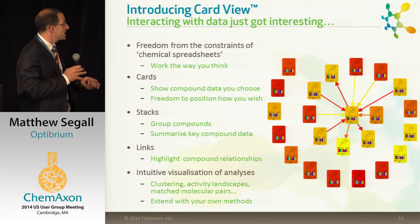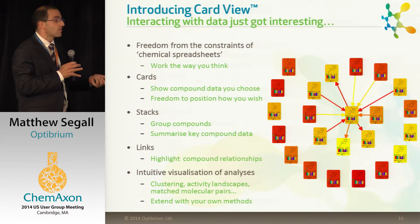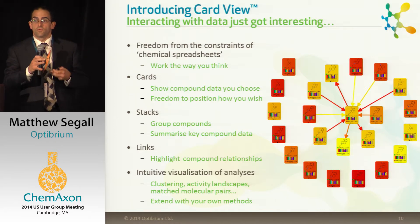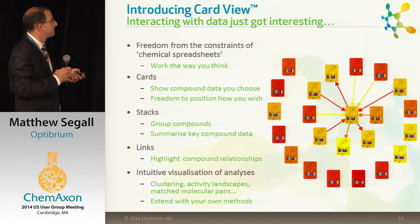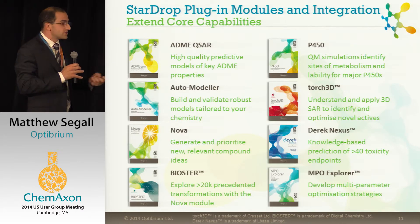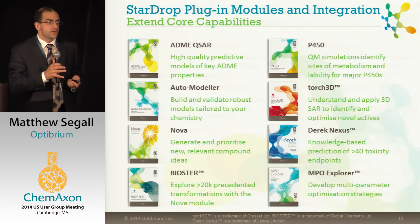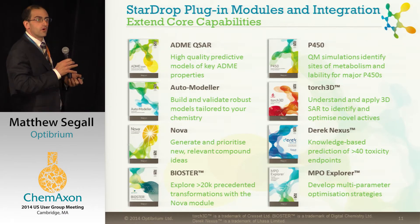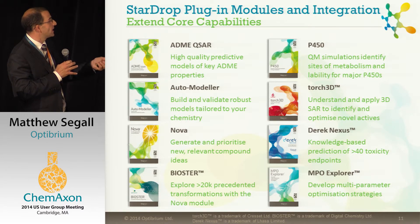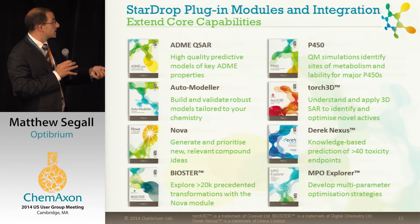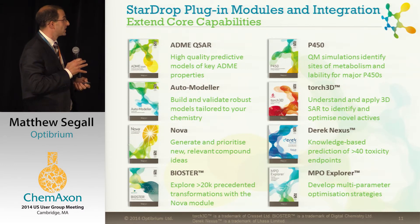This is a foundation on which you can build. You can organize this however you want and present your data in this way. But it also provides a foundation to use more complex analyses — things like clustering, activity landscapes, matched molecular pairs, and so on — and provide the output of those in a very easily interpreted way so you can immediately spot those key patterns that help you optimize your compounds. For the audience here, you can also extend this with your own methods, the way you like to analyze the data, and present it in this very flexible and intuitive way. StarDrop itself can be extended through a whole series of plug-in modules — there are eight of them, from predictive models of our own, building your own predictive models, idea generation and de novo design, predicting P450 metabolism, 3D SAR, predicting toxicity, and helping to develop multi-parameter optimization strategies for your projects.